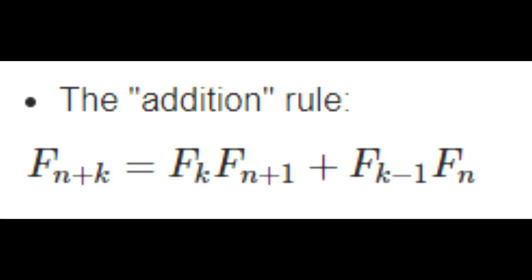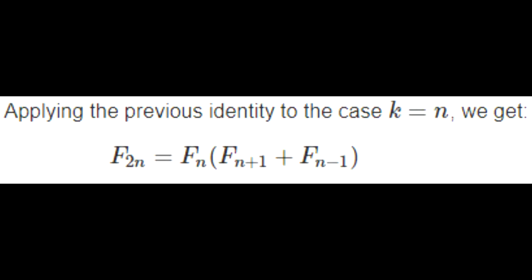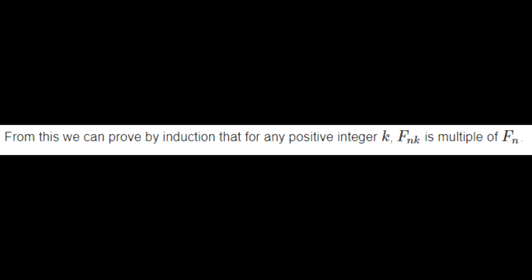So if you substitute k equal to n, because this property works, if you were simplifying it basically if I take 2 times n, that's going to equal the nth term multiplied by the term right after it plus the term before it.